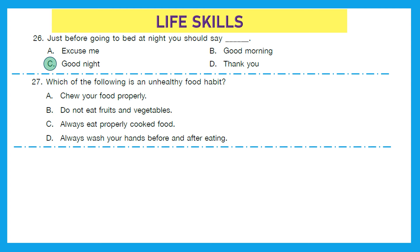Question 27: Which of the following is an unhealthy food habit? Chew your food properly, it's healthy. Always eat properly cooked food, it's also healthy. Do not eat fruits and vegetables. Hmm, that's unhealthy because we should eat fruits and vegetables. It contains lots of minerals and vitamins and helps us to fight against diseases. So, option B is unhealthy because we should eat fruits and vegetables.